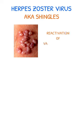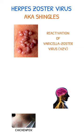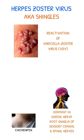The herpes zoster virus, also known as shingles, is caused by the reactivation of the varicella zoster virus in individuals who have previously had chickenpox. The virus remains dormant in the dorsal nerve root ganglia of the sensory cranial and spinal nerves.